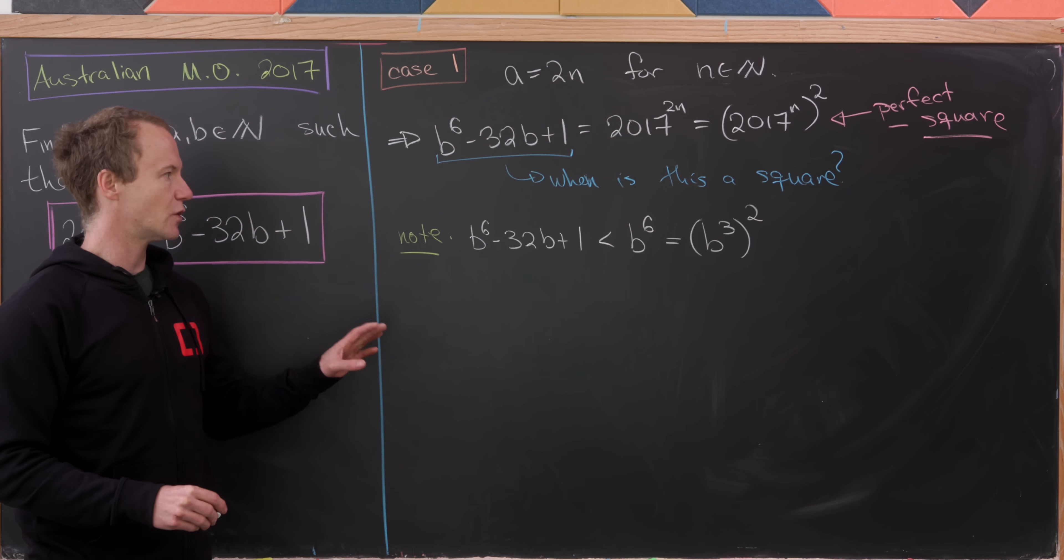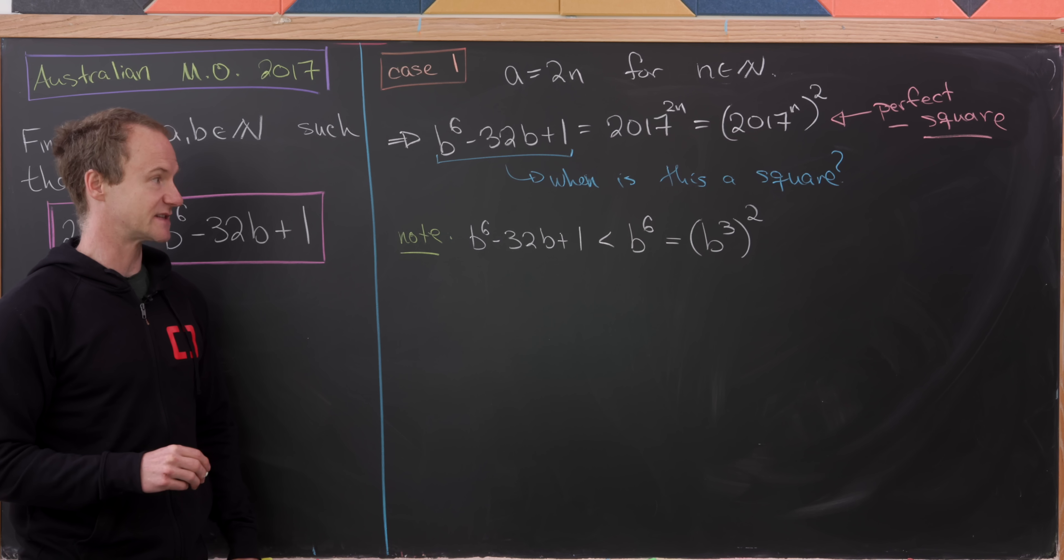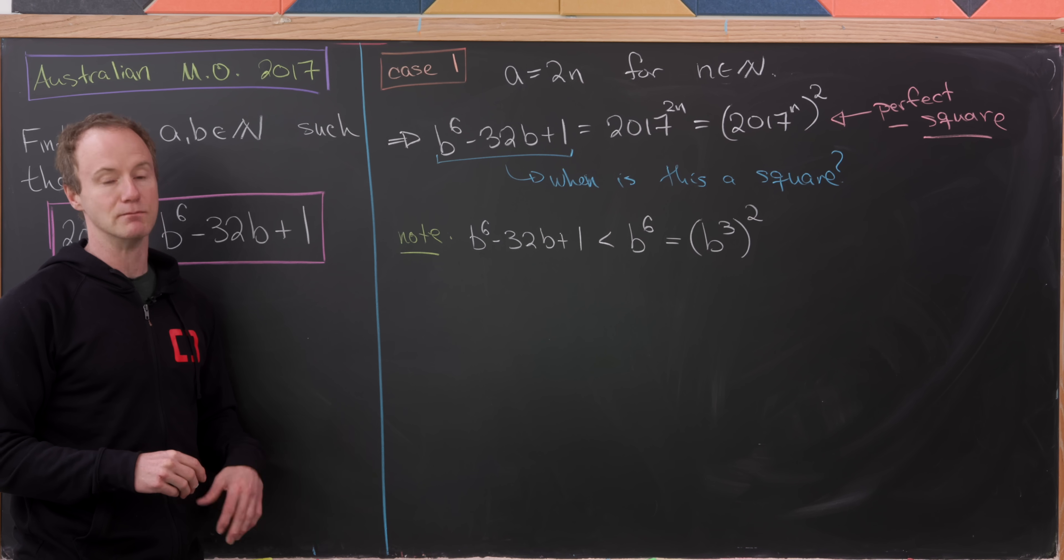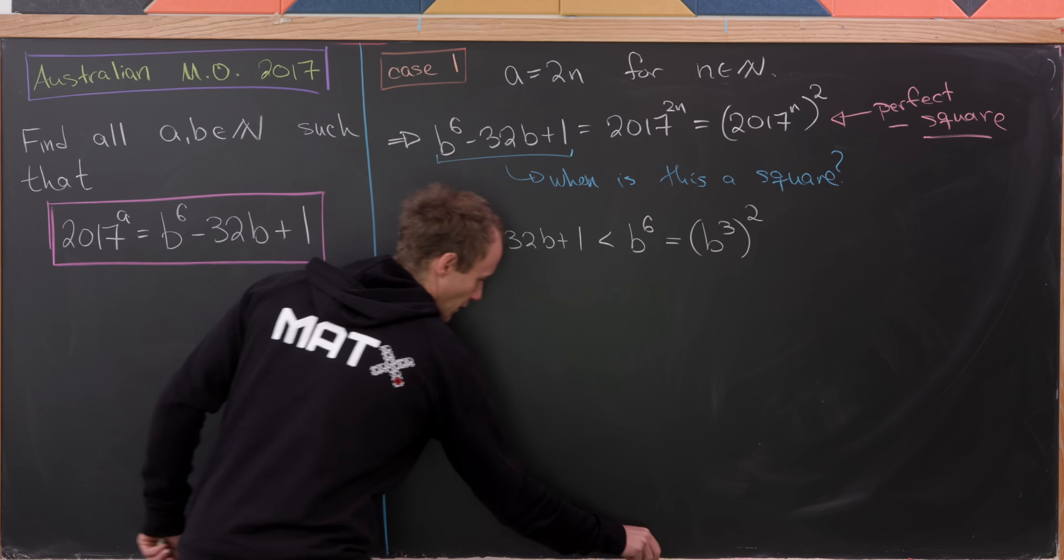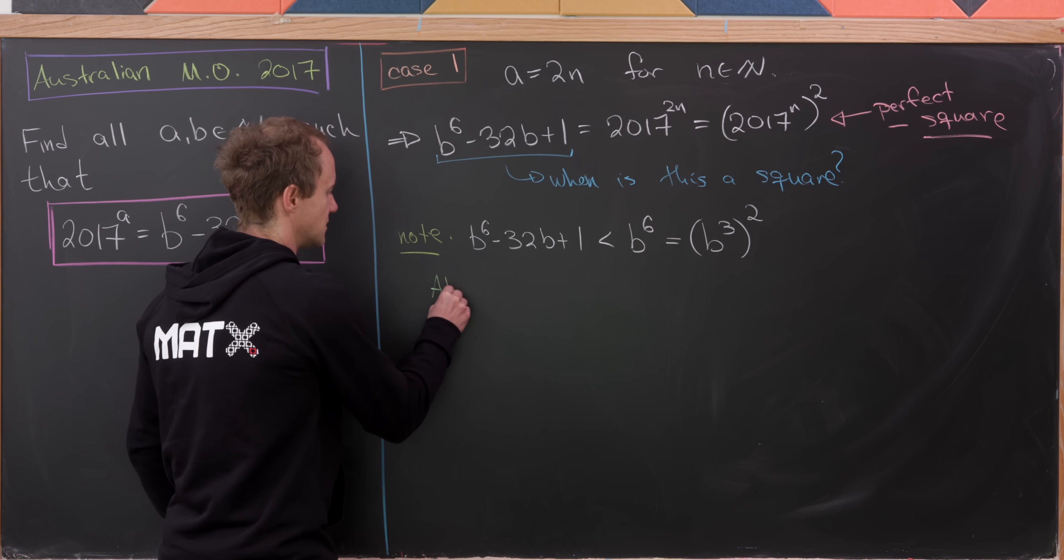But now let's observe that B^6 is a perfect square. So it's (B^3)^2. So we've got our object, if you will, is less than a perfect square. Now we're going to show that it is most of the time bigger than the preceding perfect square.